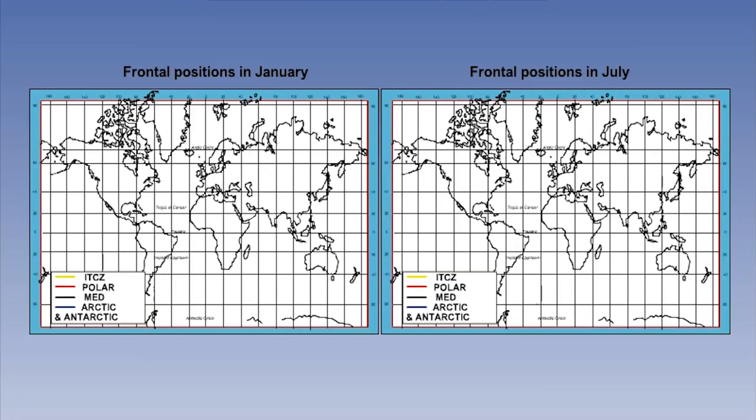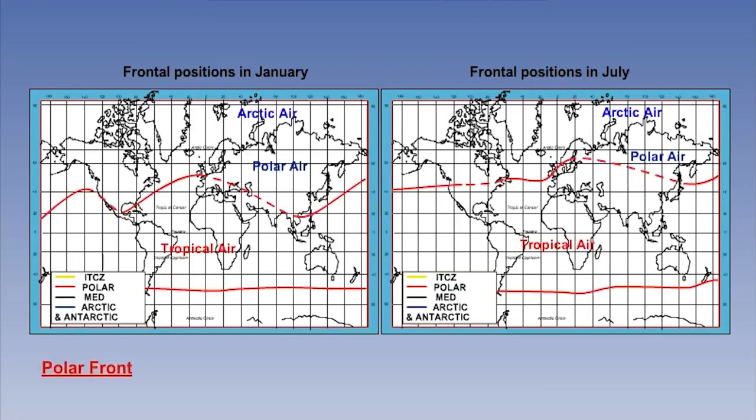Climatologically, there are three main frontal zones. The first is the polar front, which is the boundary between warm tropical air and cooler polar air. This is the zone along which most mid-latitude depressions form, lying approximately between 35 and 65 degrees north and at around 50 degrees south.